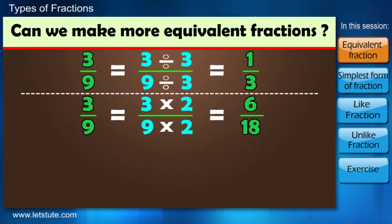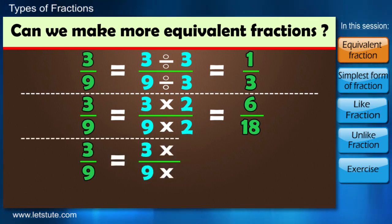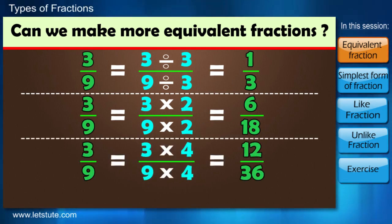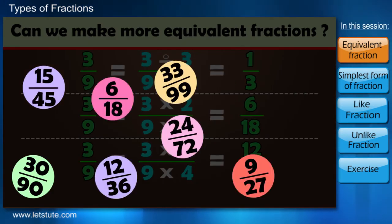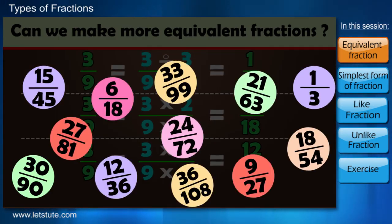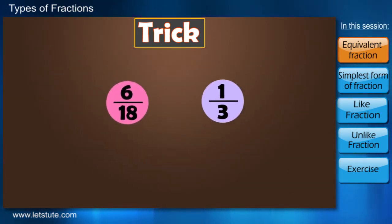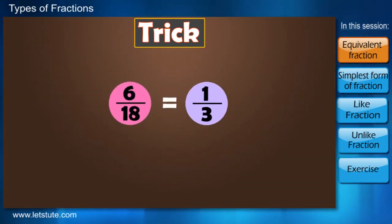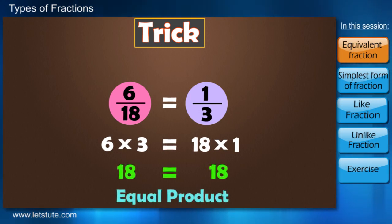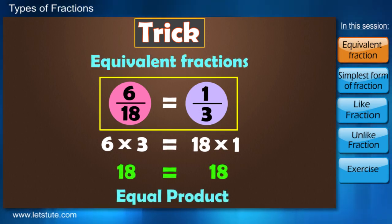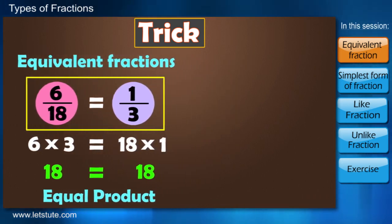This time three by nine and six by eighteen are also equivalent fractions. Three by nine and twelve by thirty-six are also equivalent fractions, and so on. There's a trick that will help you to confirm whether the two fractions are equivalent or not. When you cross multiply two fractions, if their products are equal, that means they are equivalent fractions.